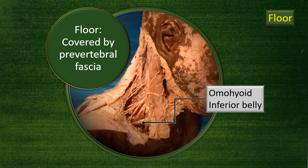The floor is the pre-vertebral fascia, beneath which are a number of muscles. Before going into the floor muscles, we need to divide this triangle using the inferior belly of the omohyoid muscle.